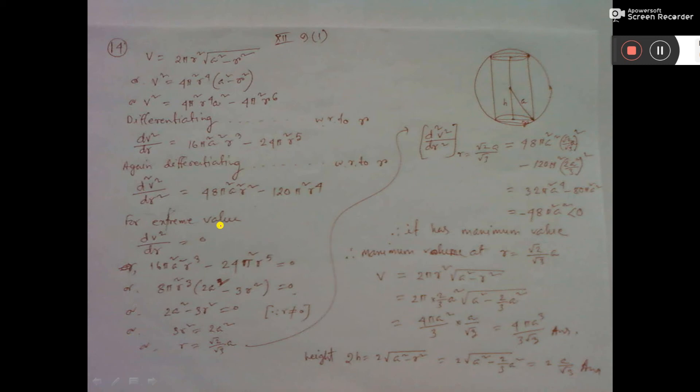Now, see, for extreme value, we have to do first differentiation equal to 0. That means this one equal to 0. Then, if you take 8π²r³ common, then it is remaining this thing. Now, see, this, since r not equal to 0, so we can send this one—that said, 0 by this equal to 0. Then 3r² = 2A², then r = √(2/3)A.